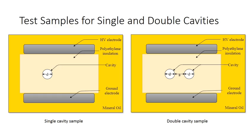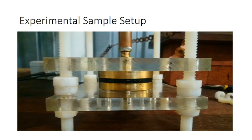Polyethylene sheets were used as test samples. The defected polyethylene disc was sandwiched between two healthy discs. The resultant specimen was clamped tightly between two electrodes and then immersed in mineral oil to avoid surface discharges.